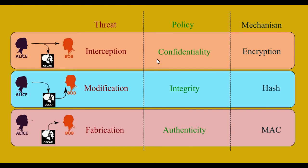For integrity, hash functions are applied. Hash functions are one-way functions — if you make even a small change in the string, the hash will change. So for integrity maintenance, we use hash functions. If an attacker like Oscar makes any change to the message sent by Alice, the hash will be changed, and Bob will be able to check whether the received message hash matches the hash originally sent by Alice.